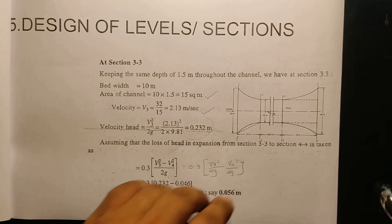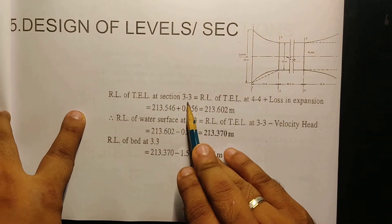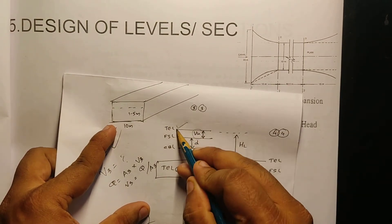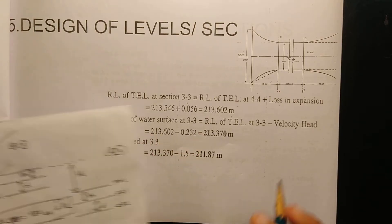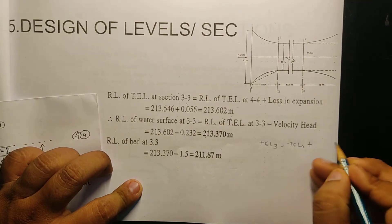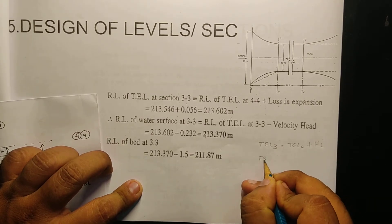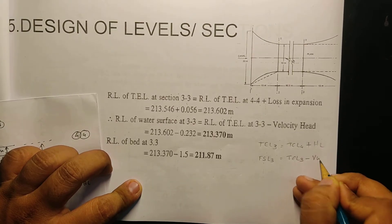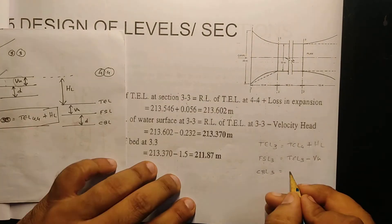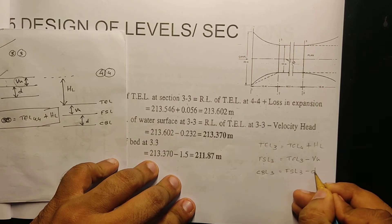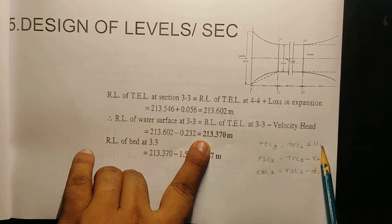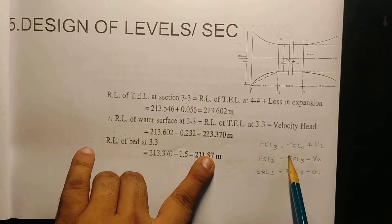What is the head loss? Head loss is 0.056 meters. Therefore, TL at 3-3 equals TL at 4-4 plus head loss. TL at 3-3 = TL at 4-4 plus head loss. Similarly, FSL = TL minus velocity head. The value of TL at 3-3 is approximately 213.60, and the answer gives values of 213.370 and 211.87.